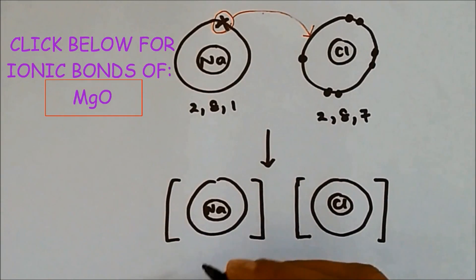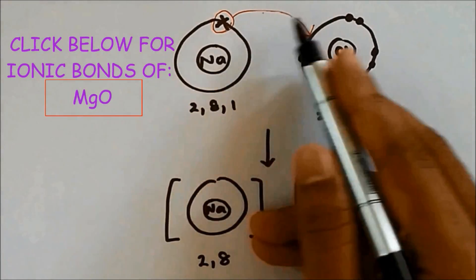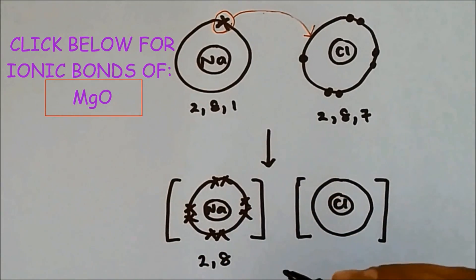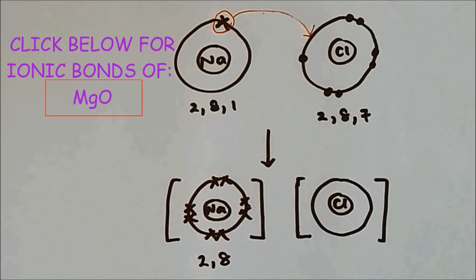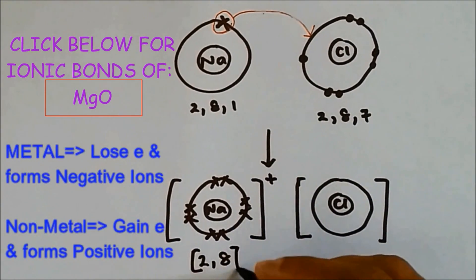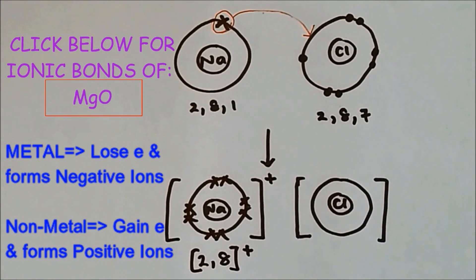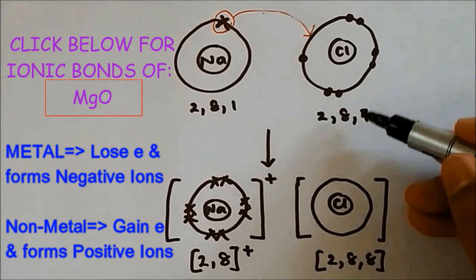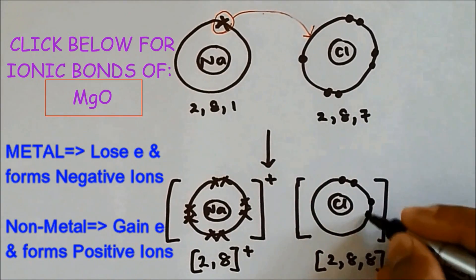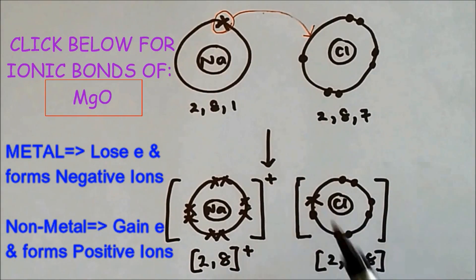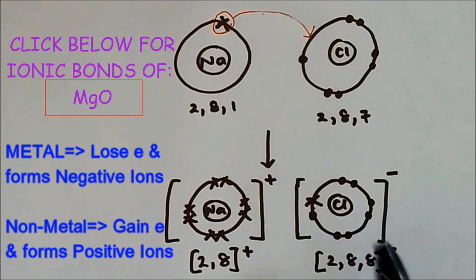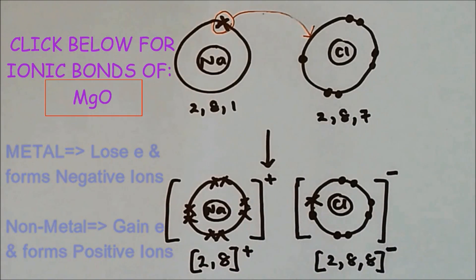So sodium, which was 2,8,1, now has become 2,8 because it has lost the electron. I am just going to draw the second shell. And since it has lost one electron, now it is a positive ion. Chlorine, which was 2,8,7, has now become 2,8,8, because it has gained one electron — this electron from the sodium. Since chlorine has an extra electron, it has become a negative ion. So this positive sodium and this negative chlorine ion have attraction, and the attraction between them is the ionic bonding.